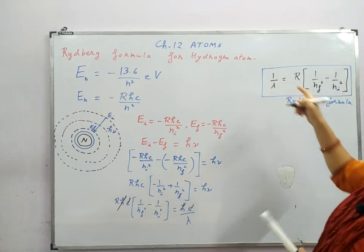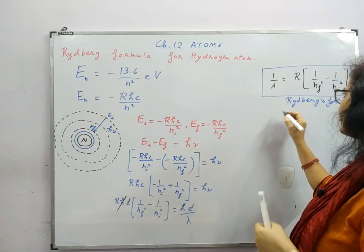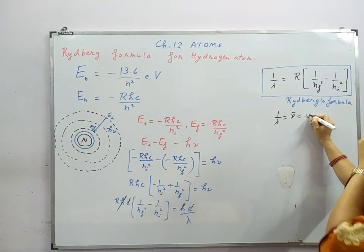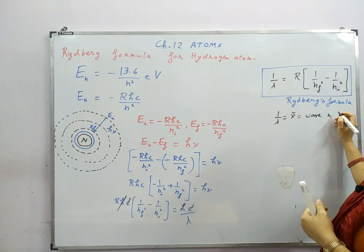Now if we replace this 1 by lambda by wave number, 1 by lambda equals nu bar. This is called the wave number.